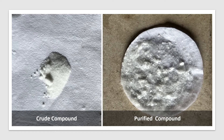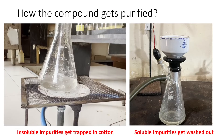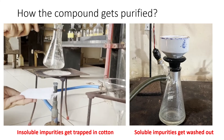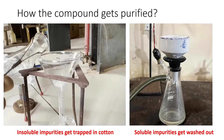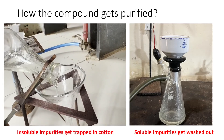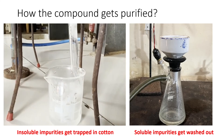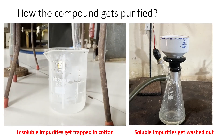Now the question is: why does this process remove impurities? When we boil the solution and filter it through cotton, the insoluble impurities get trapped in the cotton. After cooling, when the solid separates out, the soluble impurities will remain in solution. When we filter the solution a second time, the soluble impurities get washed out. This is how the whole process removes soluble and insoluble impurities.